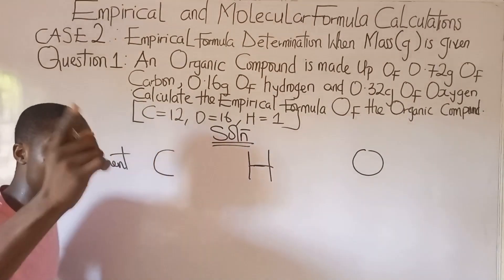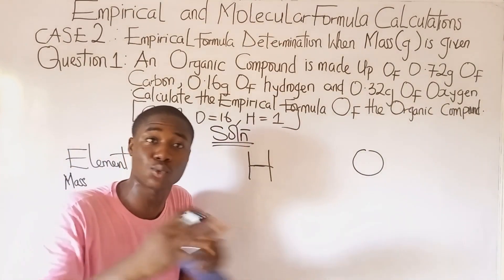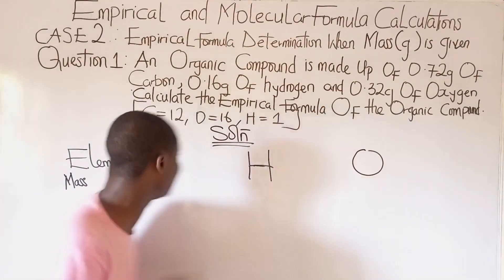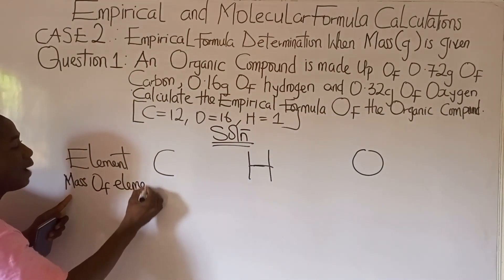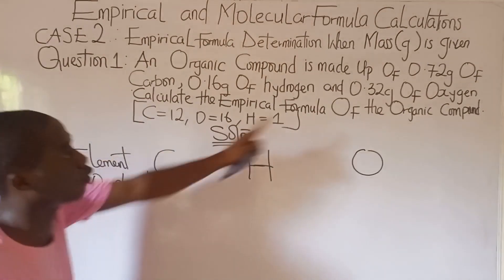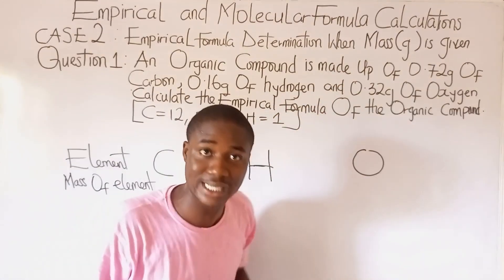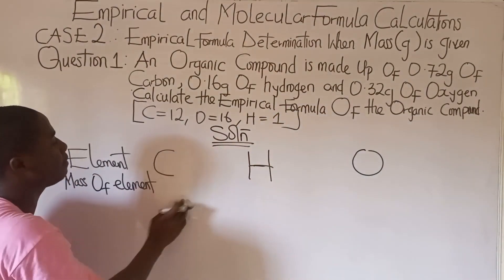You can see now it's different. If you've watched the first case we discussed about on percentage, here I wrote mass of elements. In that particular video lesson, I wrote percentage because then percentage was given. Now, what are the mass of the elements given?